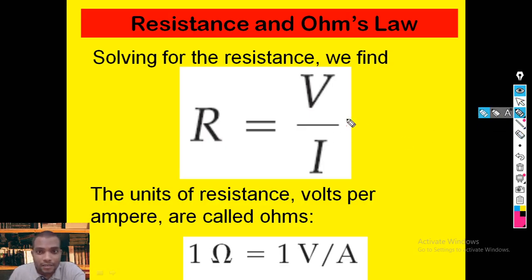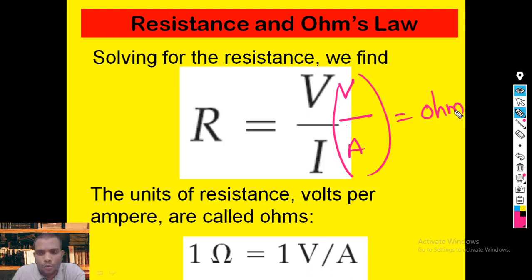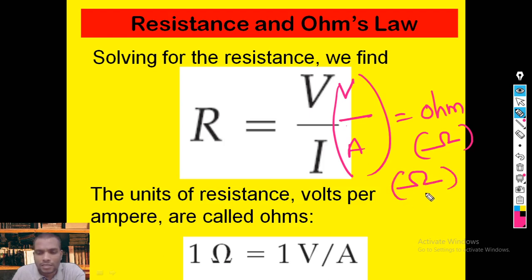From Ohm's law, R = V / I. The units for resistance: voltage is in volts and current is in amperes. Dividing volts by amperes gives a new unit called Ohm. In symbolic notation, Ohm is represented by the omega symbol — draw a parallel line, give a bump on top, and draw another line. This symbol represents Ohm, the unit of resistance.